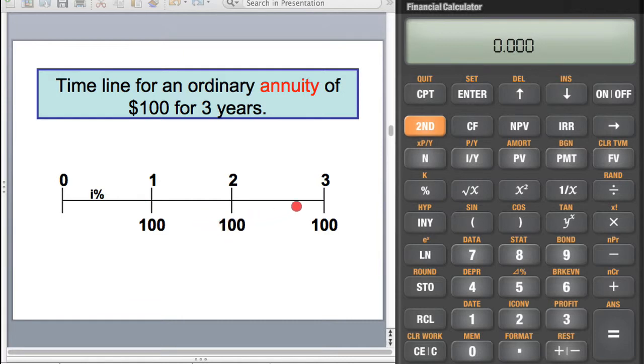Basically, what we want to know is what would be the terminal value or the future value (FV) of the stream of equal payments. A stream of equal payments over equal intervals of time is basically an annuity.